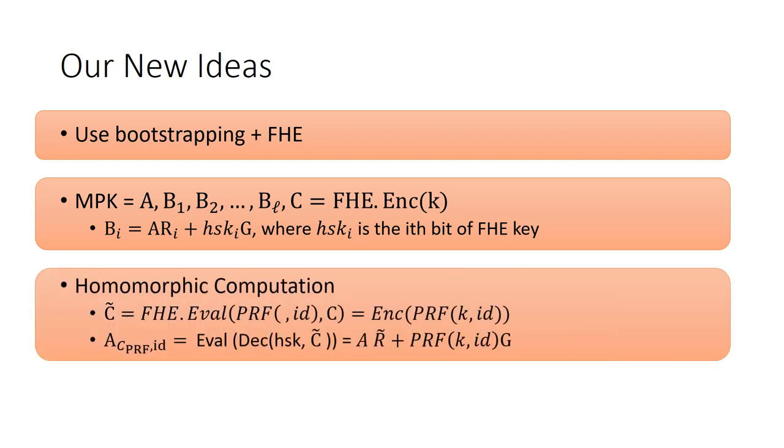The homomorphic computation of PRF is conducted in two steps. First, use the FHE scheme to compute the PRF circuit, and then use the bootstrapping method to switch it back to the required GSW ciphertext. Hence, we just need the decryption circuit of the used packed FHE scheme, which is NC1.